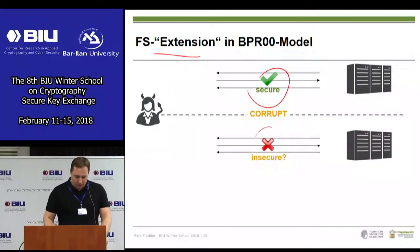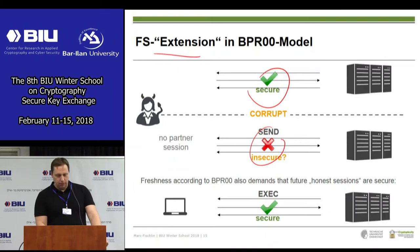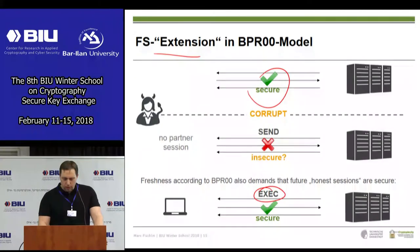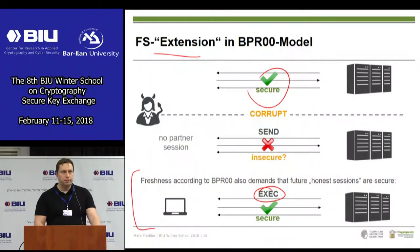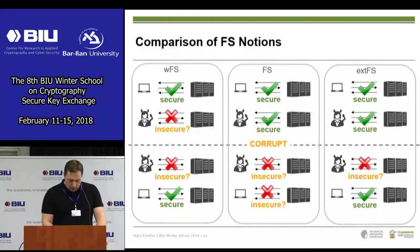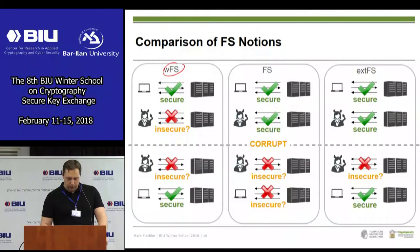Summarizing the different notions: weak PFS guarantees security for passive past sessions only. Regular forward secrecy — found in most papers today — says past sessions are secure whether the adversary was active or passive, but future sessions have no guarantees even if between two honest parties. These two notions are not directly comparable. The BPR extended version adds that future honest sessions are also secure, which gives a strict implication.